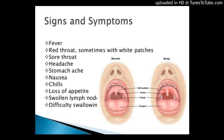Types of Infection and Symptoms. Symptoms depend on the part of the body that is infected. Below are common diseases caused by group B strep bacteria in adults and their symptoms. Bacteremia and sepsis, blood infections: symptoms include fever, chills, low alertness. Pneumonia, lung infection.